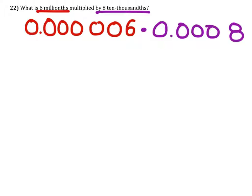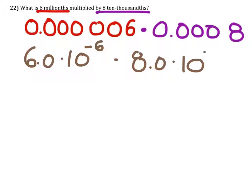Well, let's change these into scientific notation because it would be so easy. Six point zero times ten to the power of negative six, times eight point zero times ten to the power of negative four.